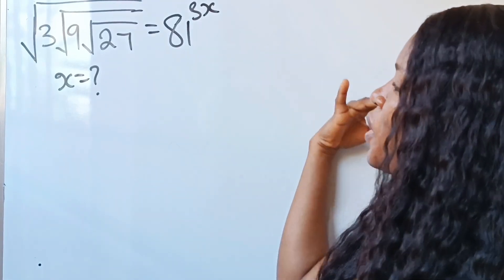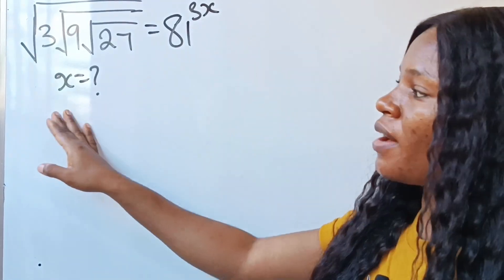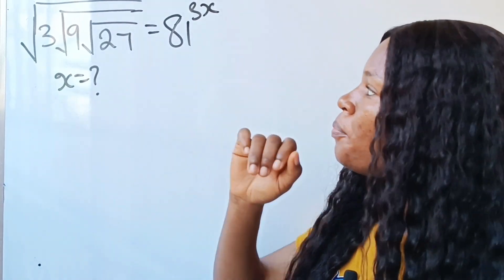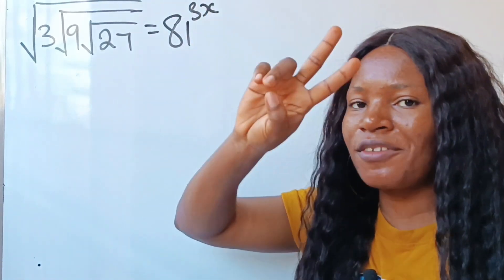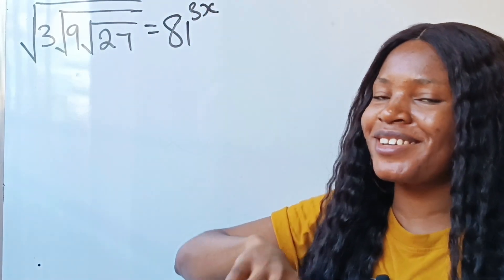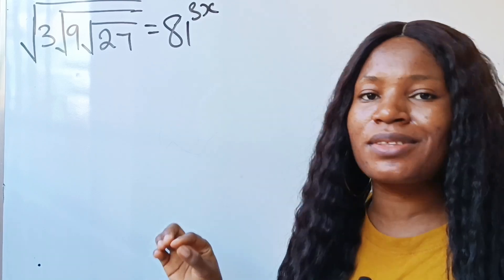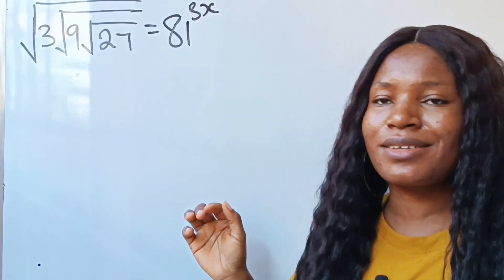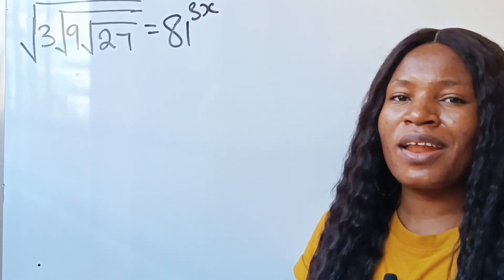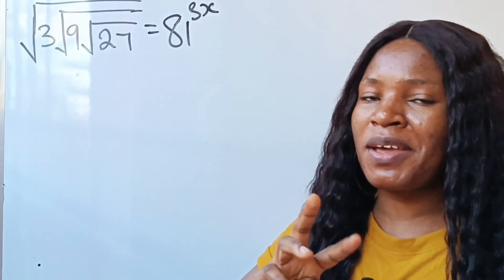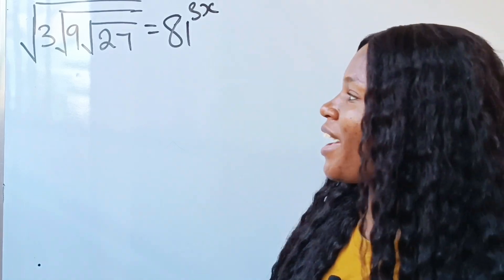Hello! Let's quickly solve for the value of x. We are going to do this using two different methods. I'd like you to see both because the last method is really interesting — that is the one I love most. But I'm going to start with the first method first.